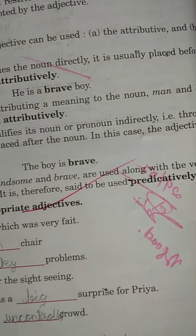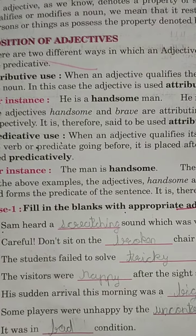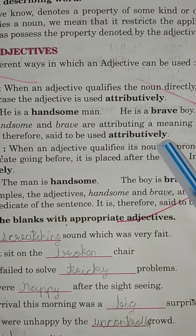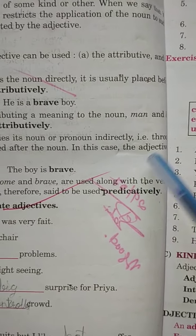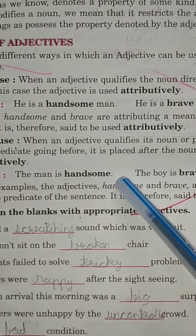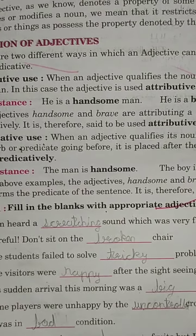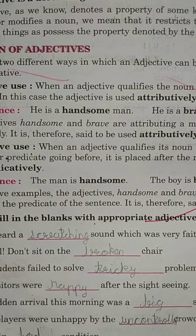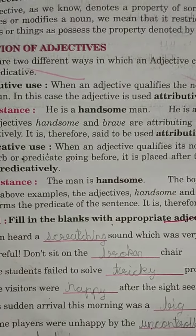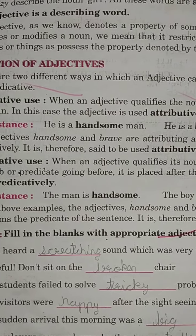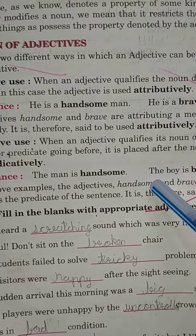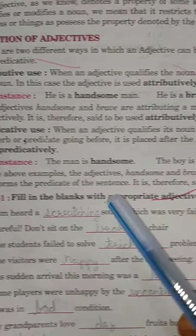In predicative use, the adjective comes through the verb — verb ke dwara use hona — aur predicate mein noun ke baad adjective use hota hai. For example: 'This student was very clever' — yahan 'clever' adjective last mein aaya, isliye yeh predicatively use hua. Agar attrib­utively bolein toh: 'You are a very clever student' — toh noun 'student' ke pehle 'clever' aaya. Toh pehle aaye toh attributive, baad mein aaye toh predicative.